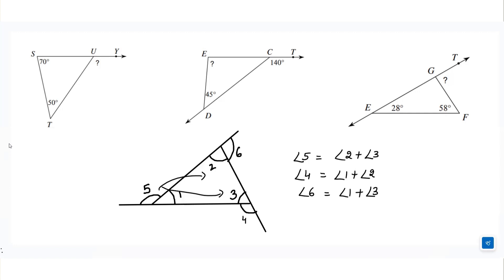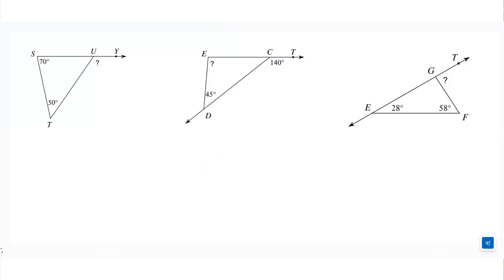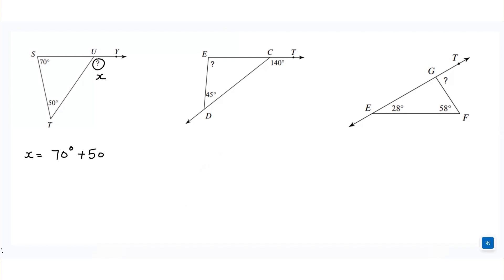First question: the question mark is the exterior angle, so it equals the sum of the two opposite interior angles, which is 70° plus 50°. That means the value of x equals 120°.